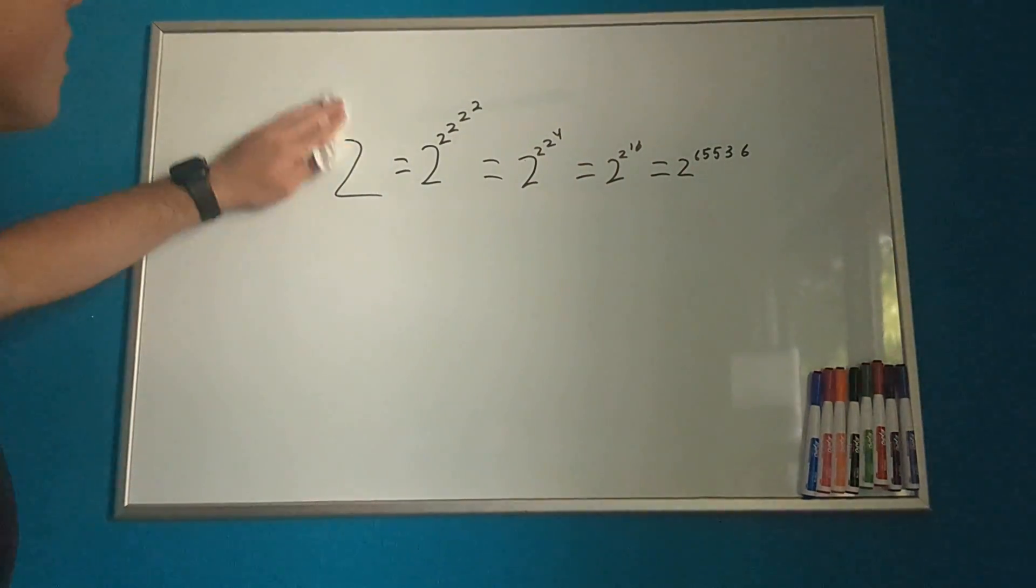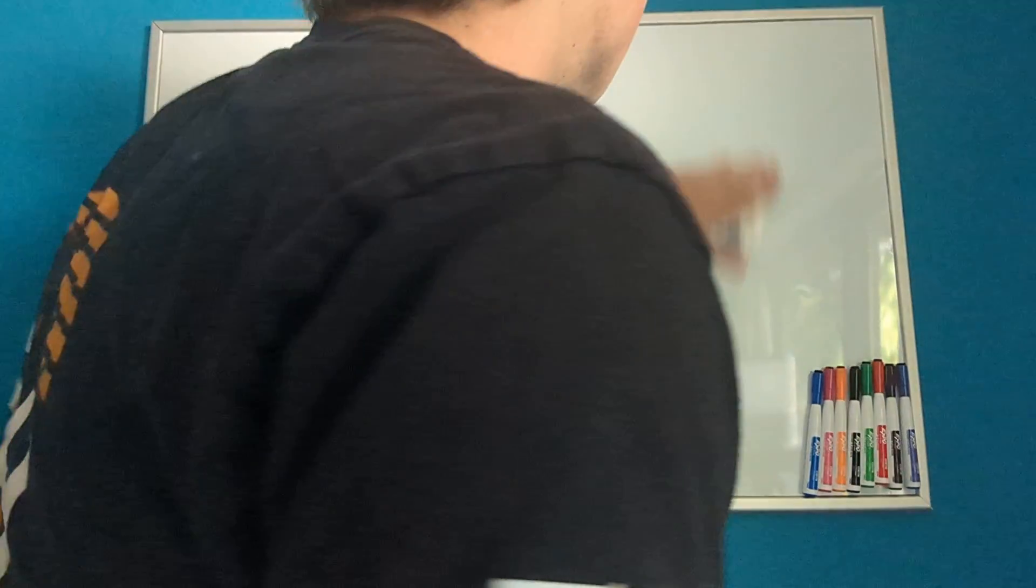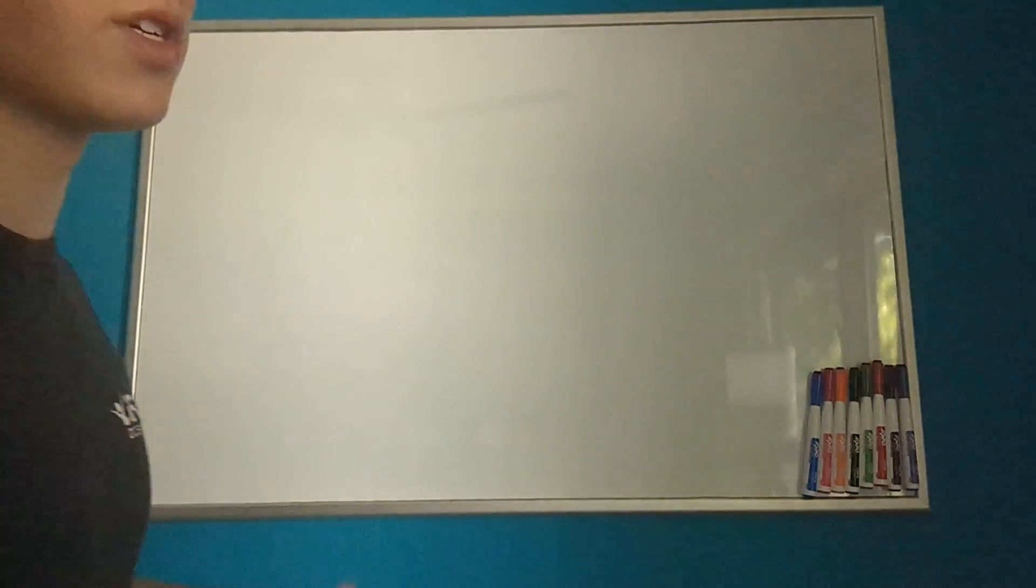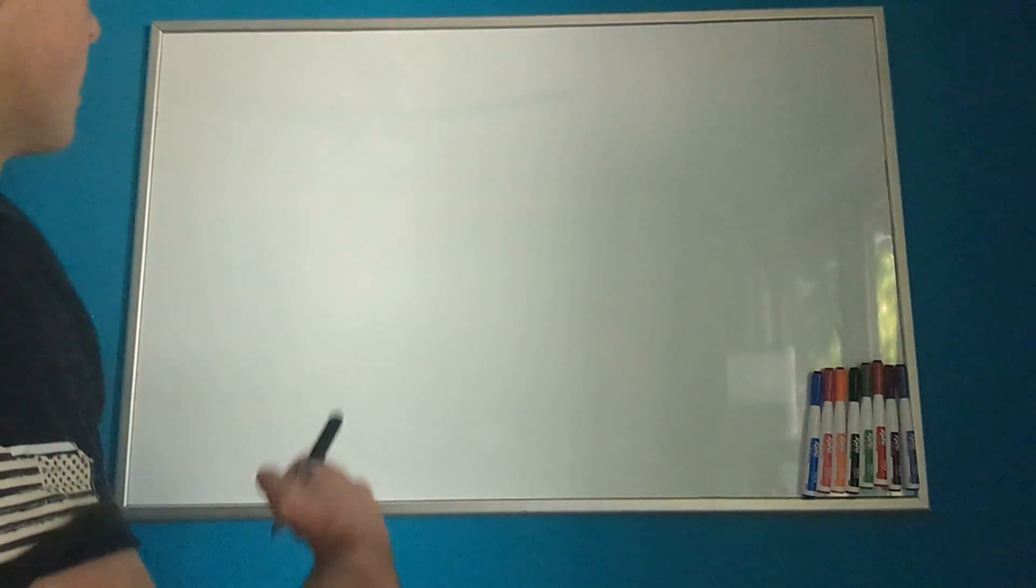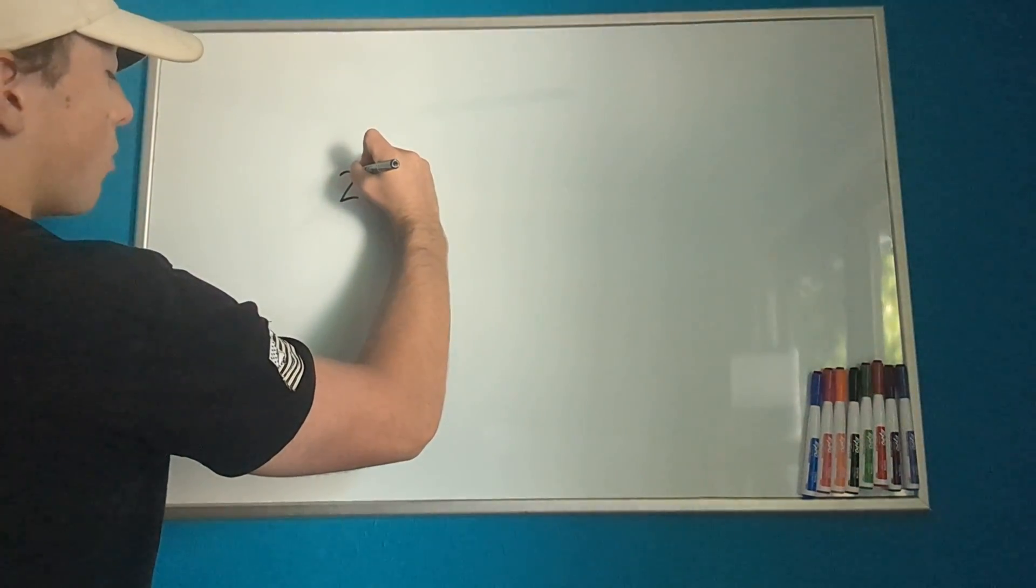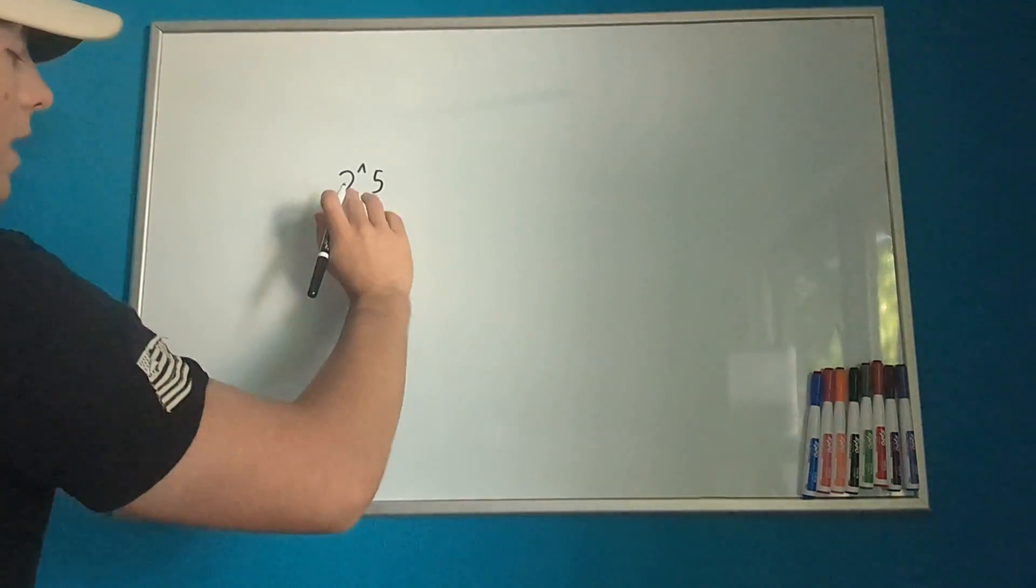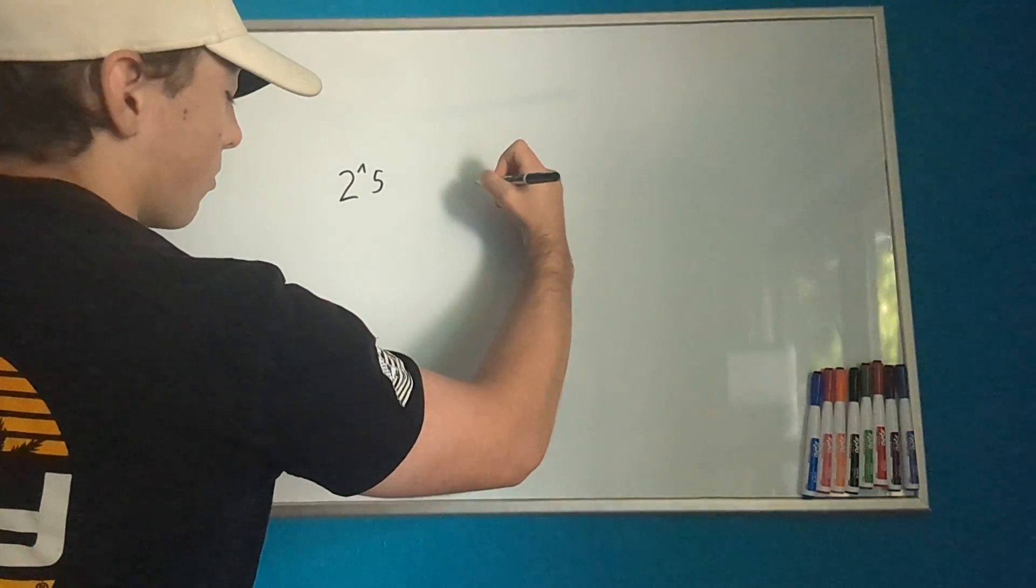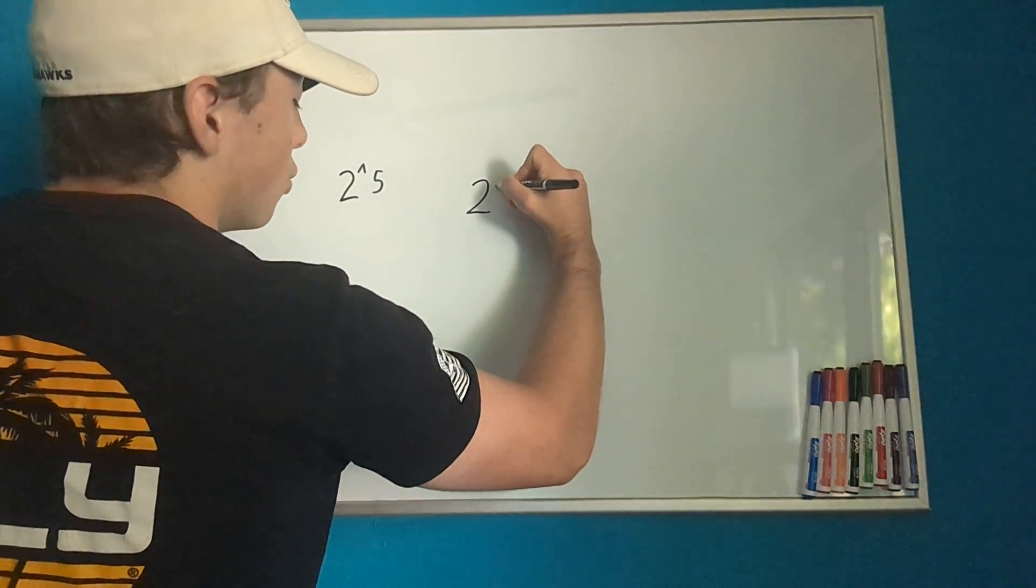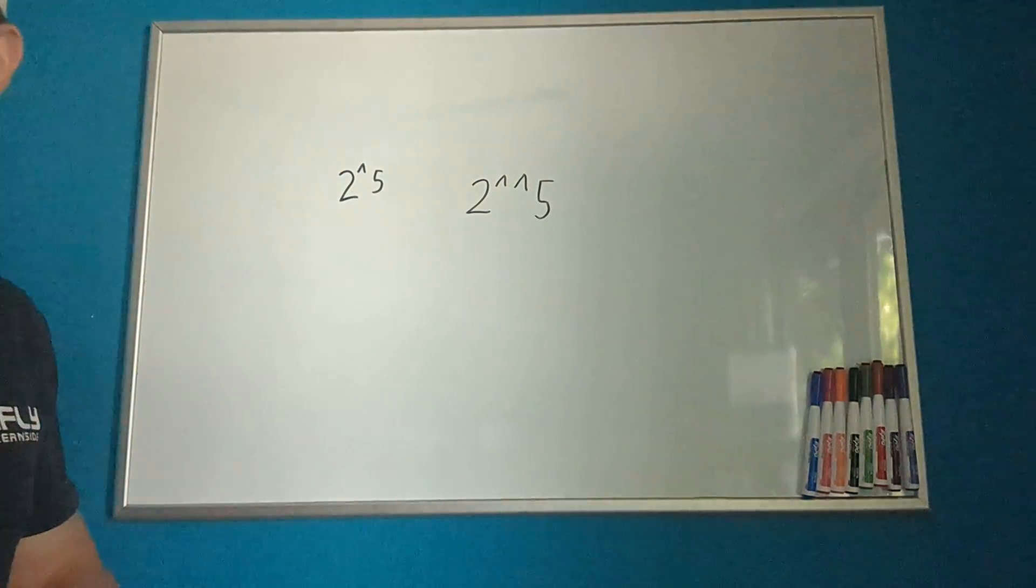And before I conclude, I just want to talk about some other ways. Another way that people will write tetration, especially on a keyboard or something, is they will have, as we said, we had a 2. And typically people on a keyboard will write it with a caret and a 5 if that was exponentiation. But with tetration, we write it as a 2 and then a double caret and then a 5.